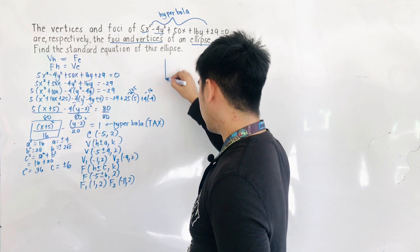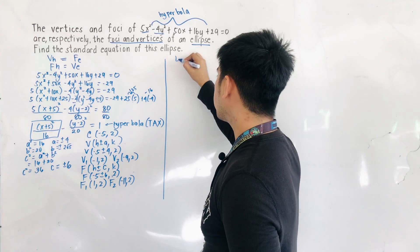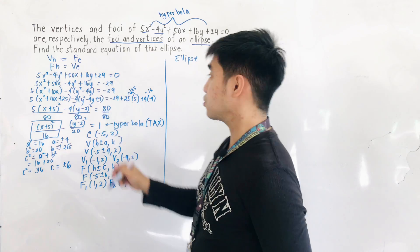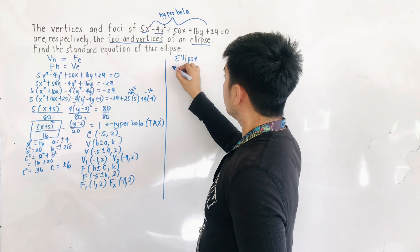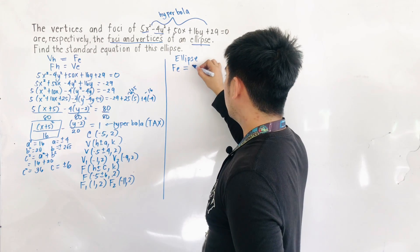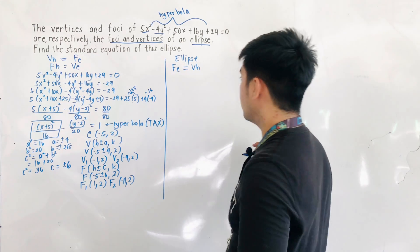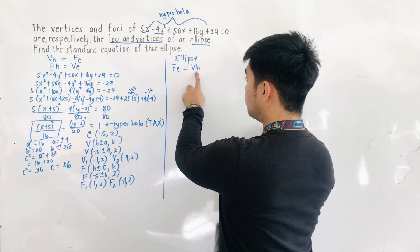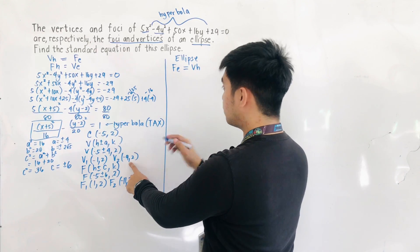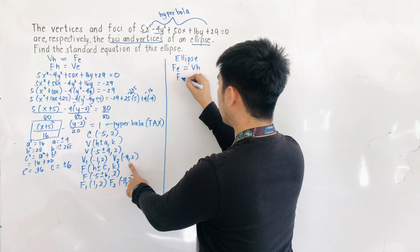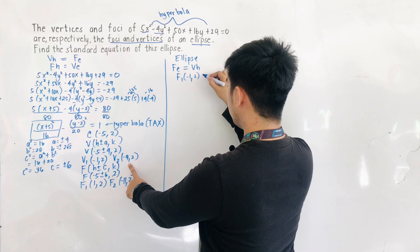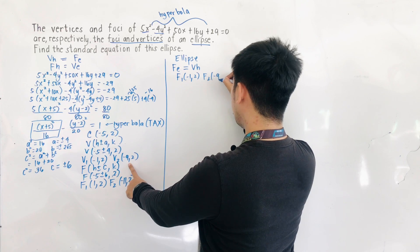Now for the ellipse. The foci of the ellipse are the vertices of the hyperbola. So F1 of the ellipse is (negative 1, 2) and F2 of the ellipse is (negative 9, 2).